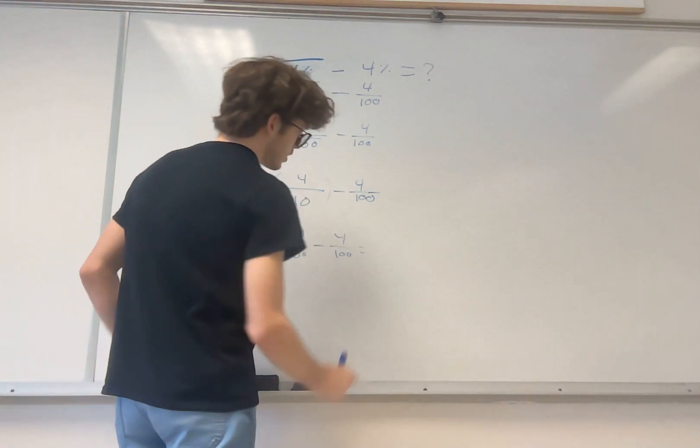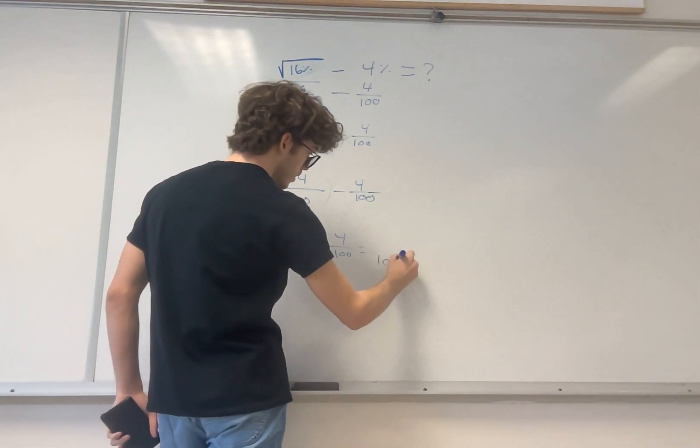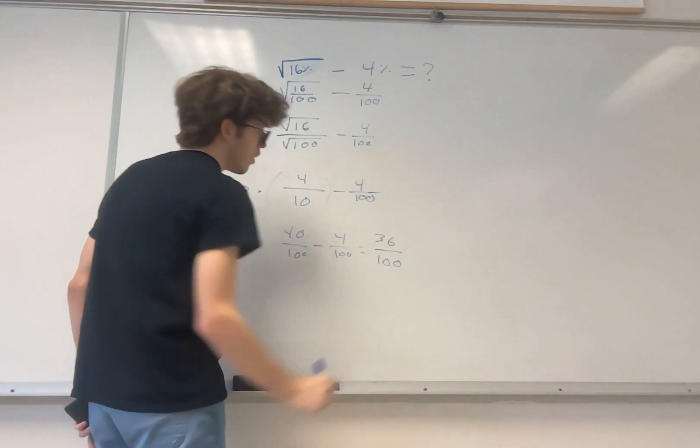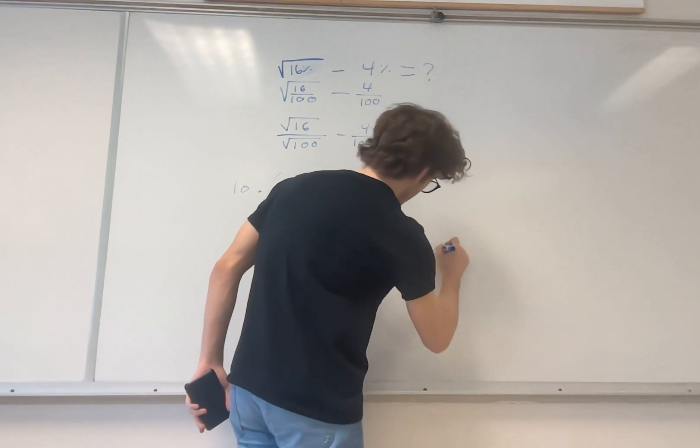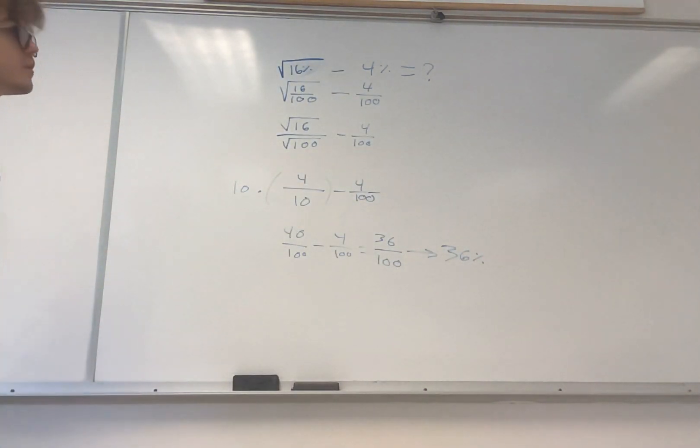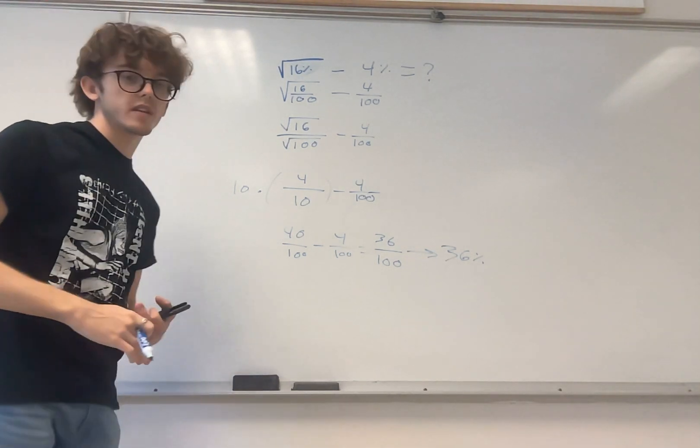And just doing some simple fractional subtraction, we're going to get 36 over 100, which we know as a percentage comes out to 36%. So the square root of 16% minus 4% is 36%. Thank you for watching.